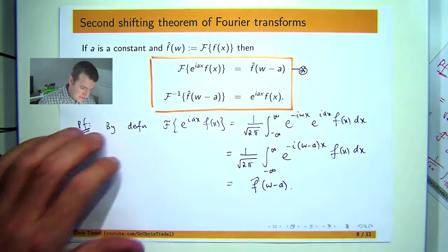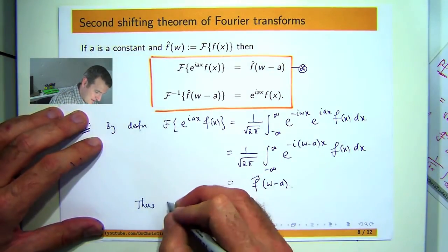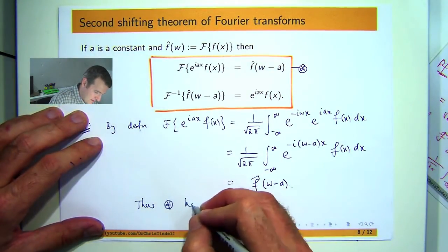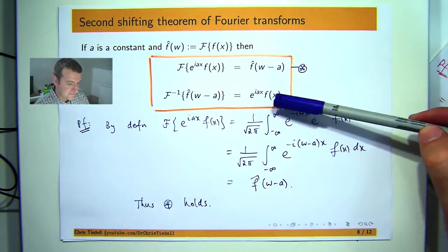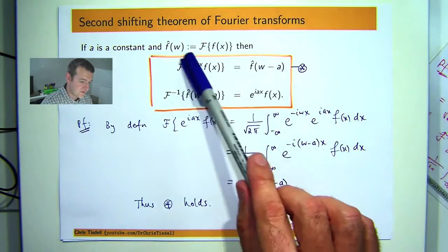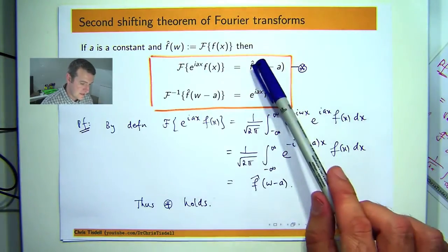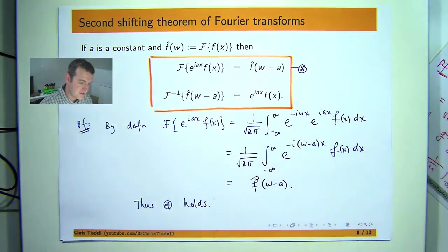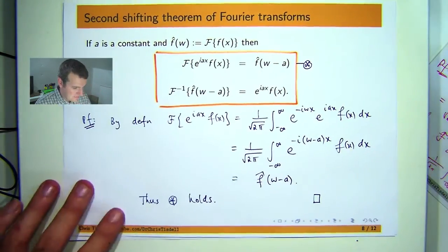So pretty easy proof. One line, two lines. And of course if star holds, then this identity holds here. What we do is you take the inverse transform of both sides. So that'll disappear and you'll be left with that. And over here you take the inverse transform of this shifted f hat. So pretty easy proof. Now let's actually apply the result and see if we can do an example.